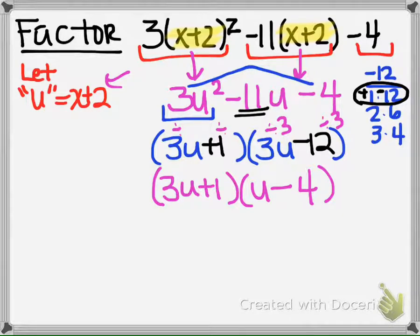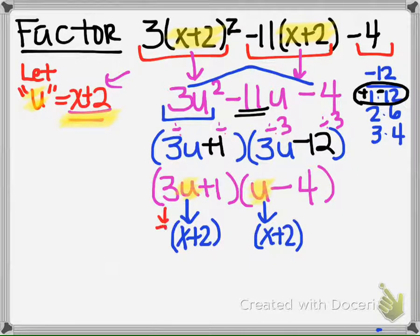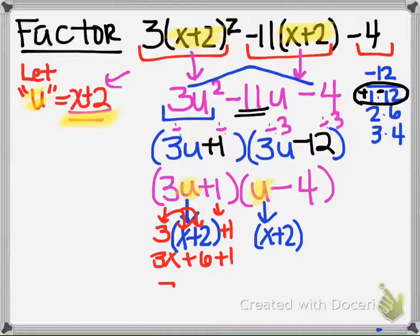So now that it's completely factored, we're going to bring in the x plus 2 again. We're going to take the u's out because u equals this, so we're going to put x plus 2 back in for u and simplify. There's a 3 in front of the u, so we're going to put the 3 in front of the parentheses, and then we have the plus 1 here. We're going to distribute this: 3 times (x plus 2) plus 1 is 3x plus 6 plus 1, which makes 3x plus 7. So that's what we're going to have in that parentheses.